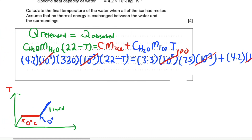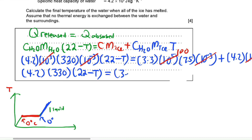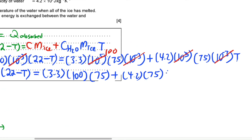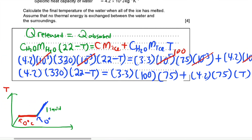The equation becomes: 4.2 × 330 × (22 − T) = 3.3 × 100 × 75 + 4.2 × 75 × T. You can use your GDC to solve this. The final temperature T is approximately 3.3°C.